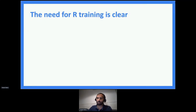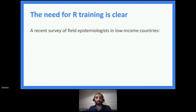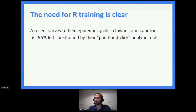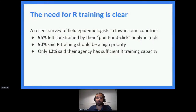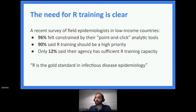We can put some numbers to the need for our training. We recently did a survey with TEFINET, the group that supports field epidemiologist training programs. In the survey, field epidemiologists in low-income countries overwhelmingly said they felt constrained by their current tools — primarily Excel, SPSS, EpiInfo, point-and-click tools still broadly used around the world. 90% said R training should be a high priority. They recognized R is the way forward for their careers and efficiency. But only 12% said their agency had sufficient capacity to actually train them in R. They recognize it's the gold standard, they want it, but there's a training gap.